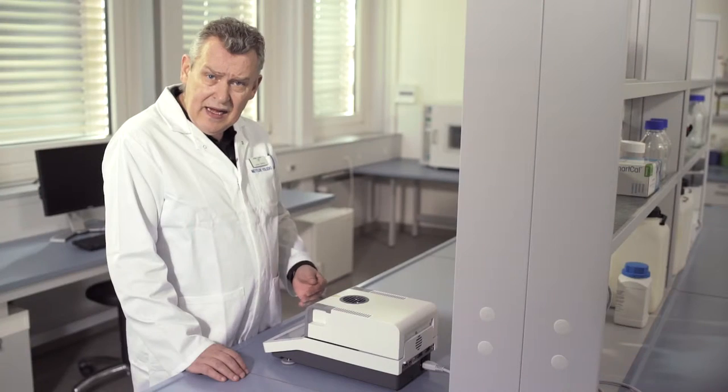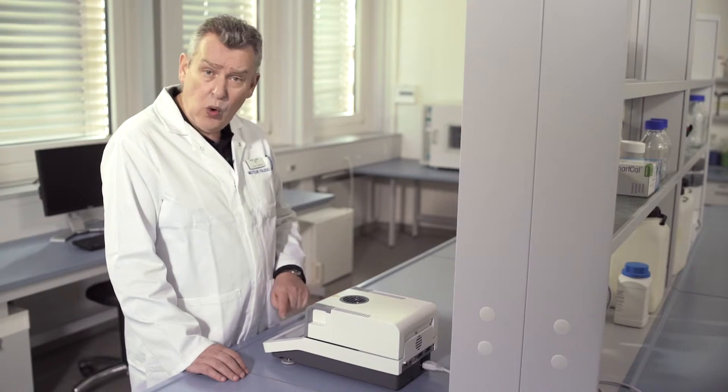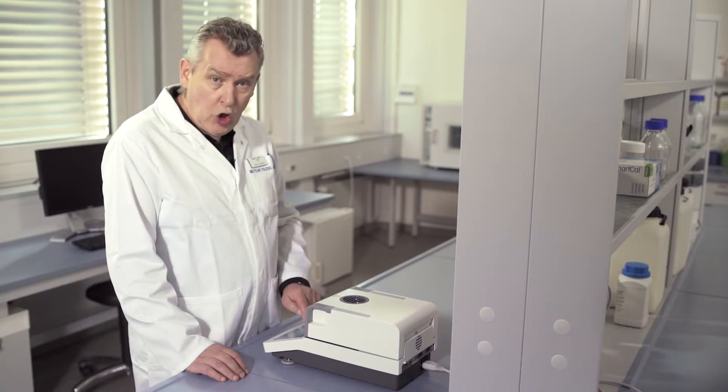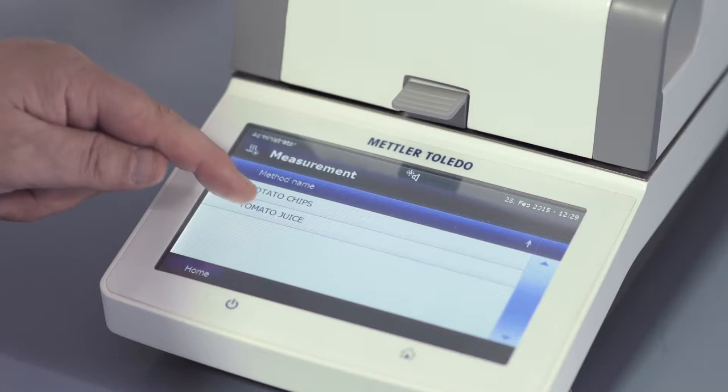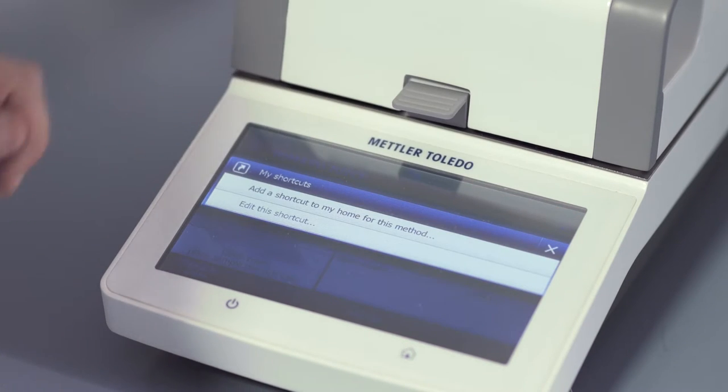For daily use of a method, it is recommended to create a shortcut on the home screen for quick and easy access. You create a shortcut by selecting the tomato juice method from the measurement menu, and then you simply press the shortcut button.